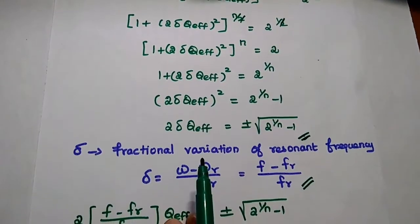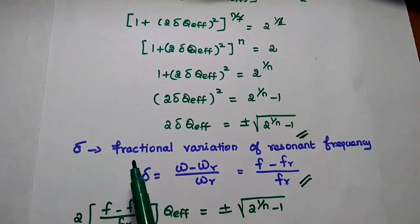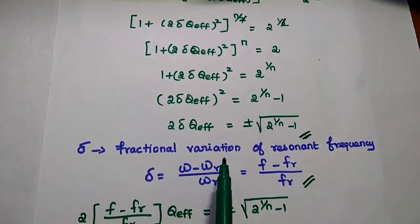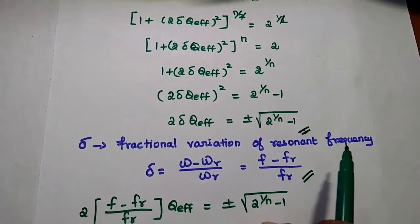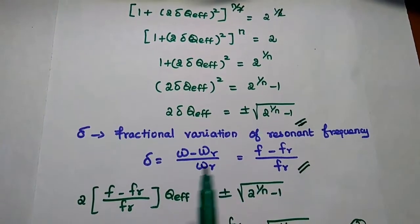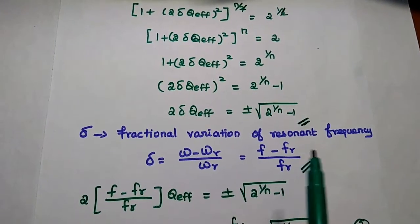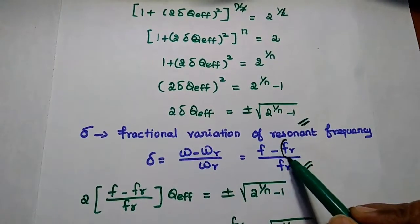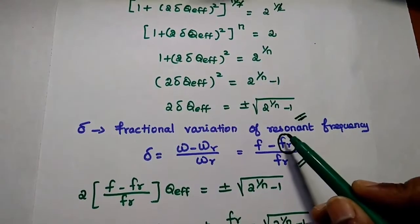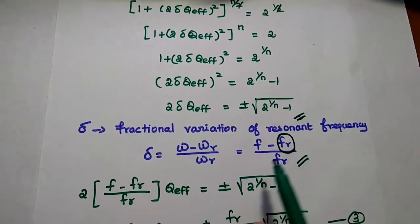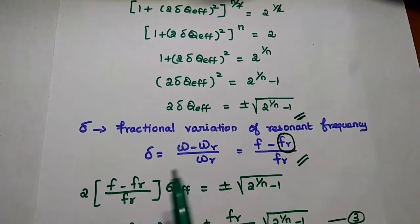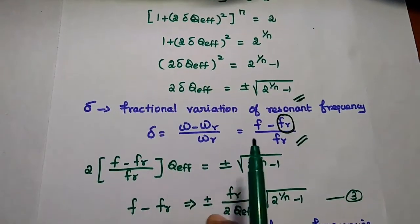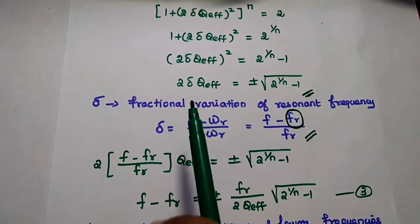Next, we substitute the value of δ. δ is the fractional variation of resonant frequency, represented as (f minus f_r) divided by f_r, where f_r is the resonant frequency. We substitute this δ value into the formula.